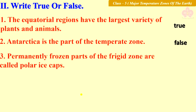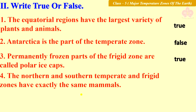Third statement: Permanently frozen parts of the frigid zone are called polar ice caps. The answer is true. Fourth statement: The northern and southern temperate and frigid zones have exactly the same mammals. The answer is false.